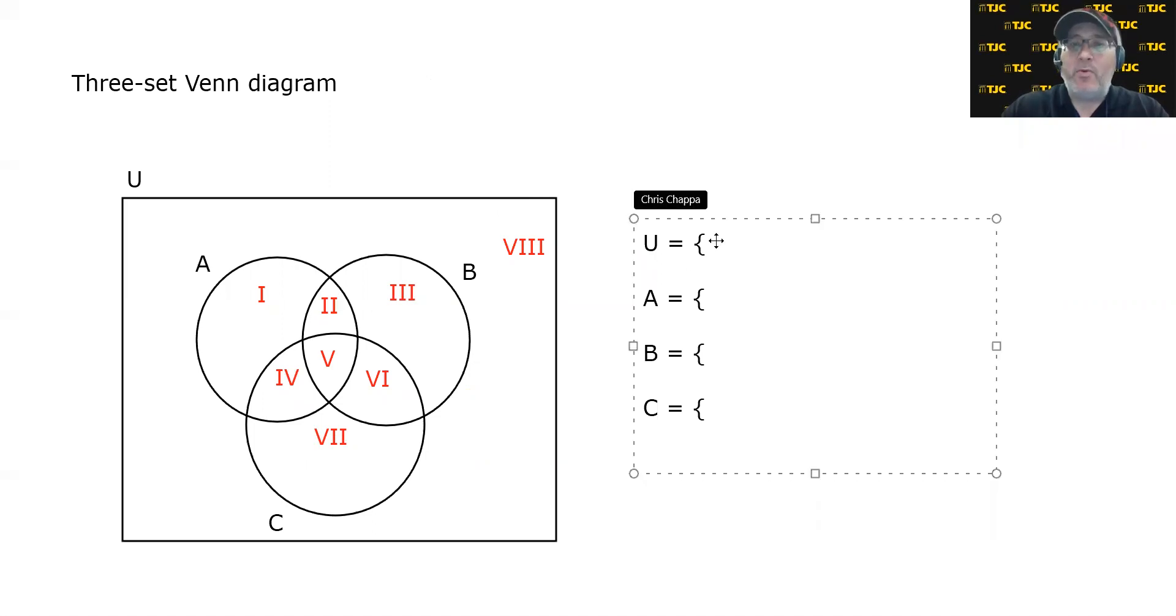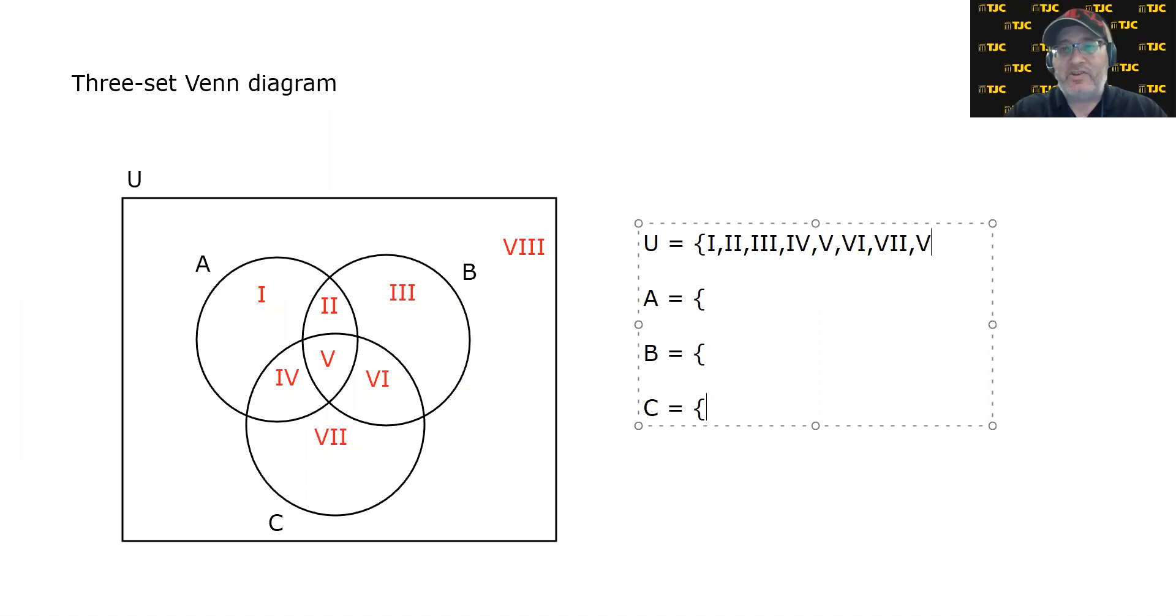And just like before, we're going to describe all of these sets as the union of regions. The universe is made up of all the regions. So region 1, 2, 3, 4, 5, 6, 7, and region 8.